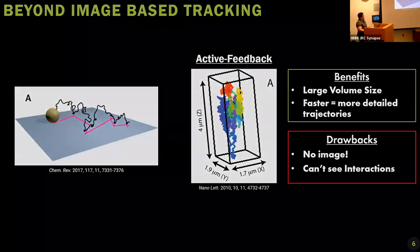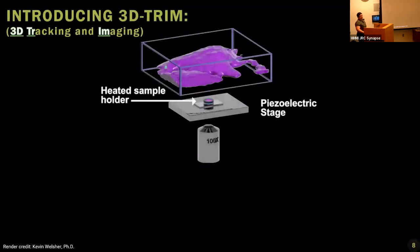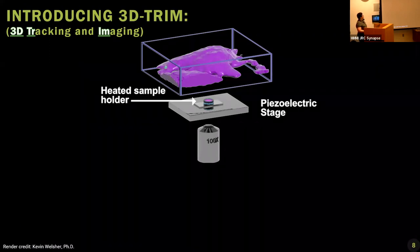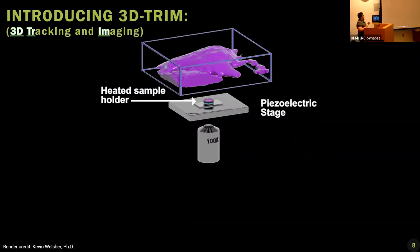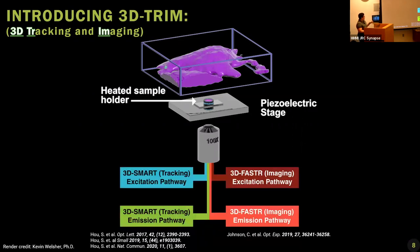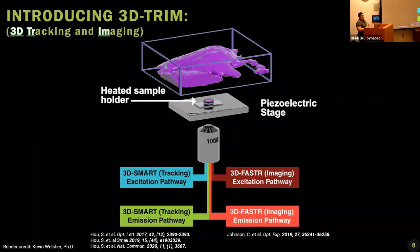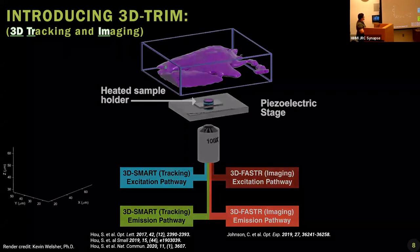We wanted to see the particle and the cell in high detail and bring imaging back to high-speed tracking. This motivated a multimodal approach, and the result was 3D TRIM — 3D tracking and imaging. The system has our virus and cell sitting on a heated sample holder on a piezoelectric stage, with an objective lens shared by two chromatically separated fluorescence microscope systems. The first, 3D SMART, is focused entirely on tracking the particle at very high speeds. The second, 3D FASTER, is an imaging method that can image while the stage is moving.